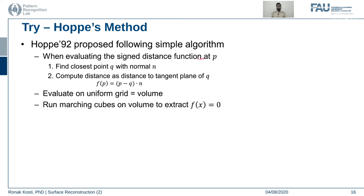The normal is associated with q, and p can be any point not necessarily in the neighborhood of q. We then compute the distance as the distance to the tangent plane of q — rather than a direct Euclidean distance. This SDF is then evaluated on a uniform grid for a particular volume. After that, we run the marching cubes algorithm on this volume to extract the iso surfaces.